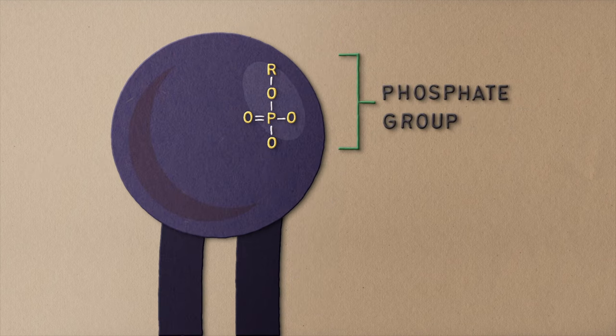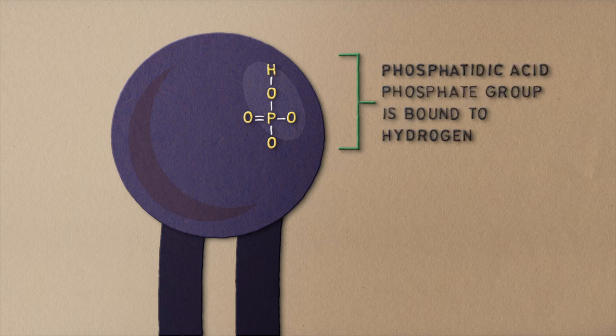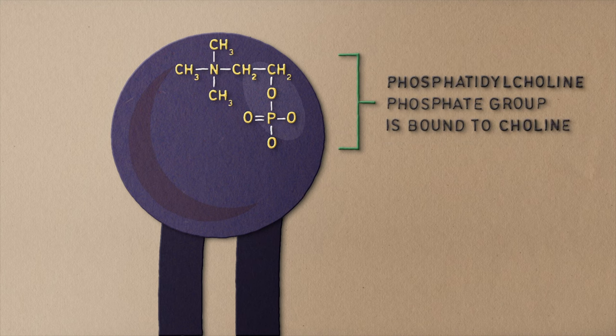The hydrophilic phosphate group can also determine the type of phospholipid. If the molecule is bound to hydrogen, you've got a phosphatidic acid. Bound to choline, you've got a phosphatidylcholine.